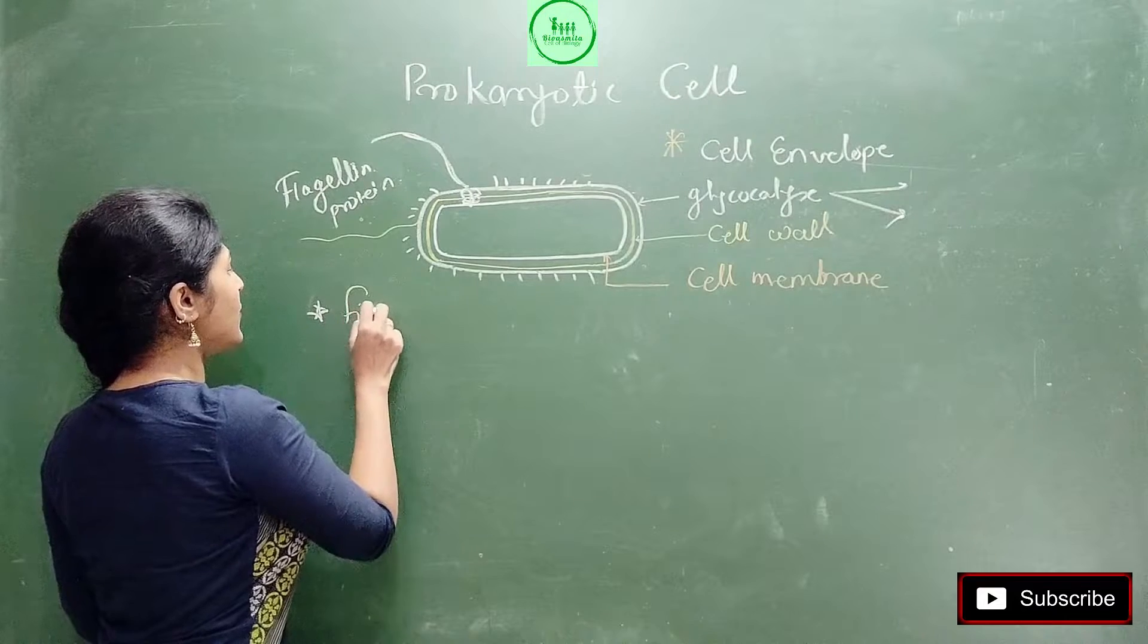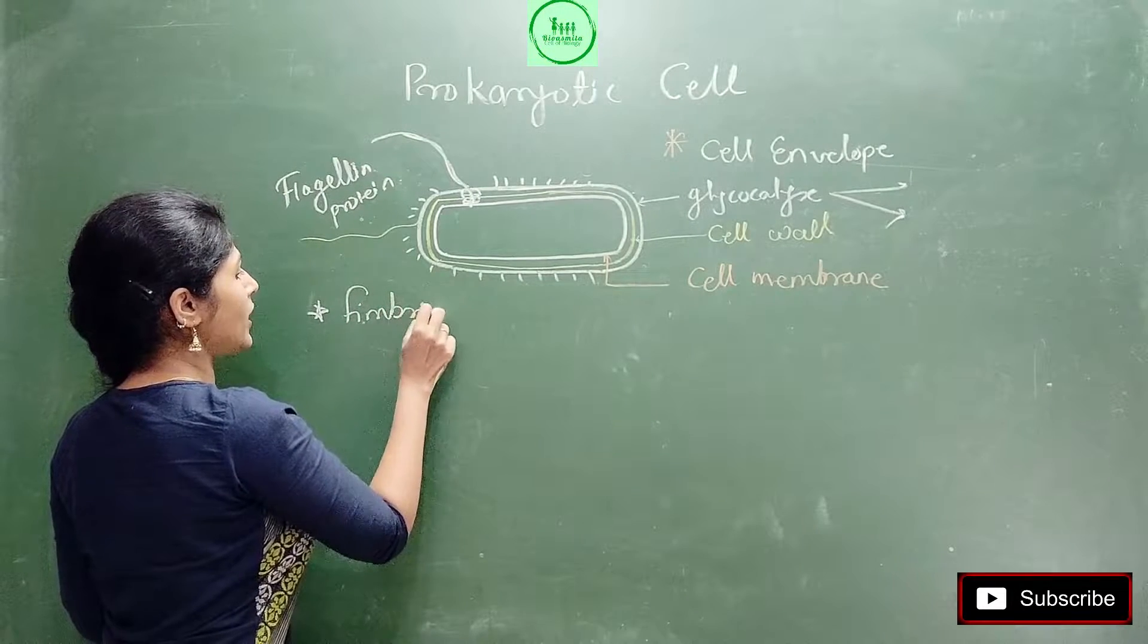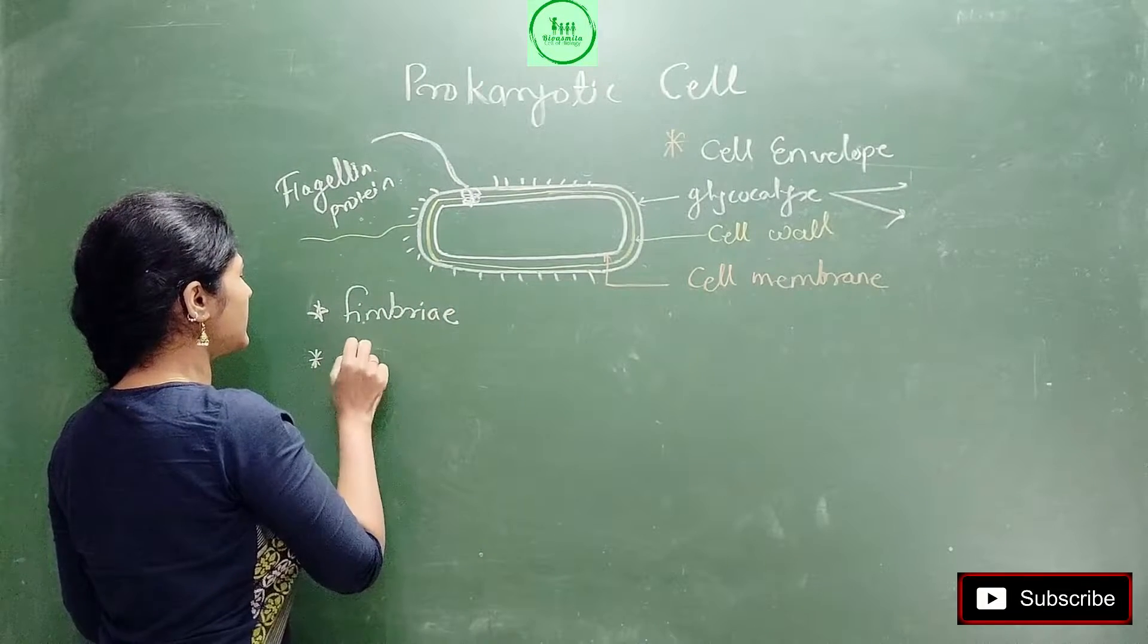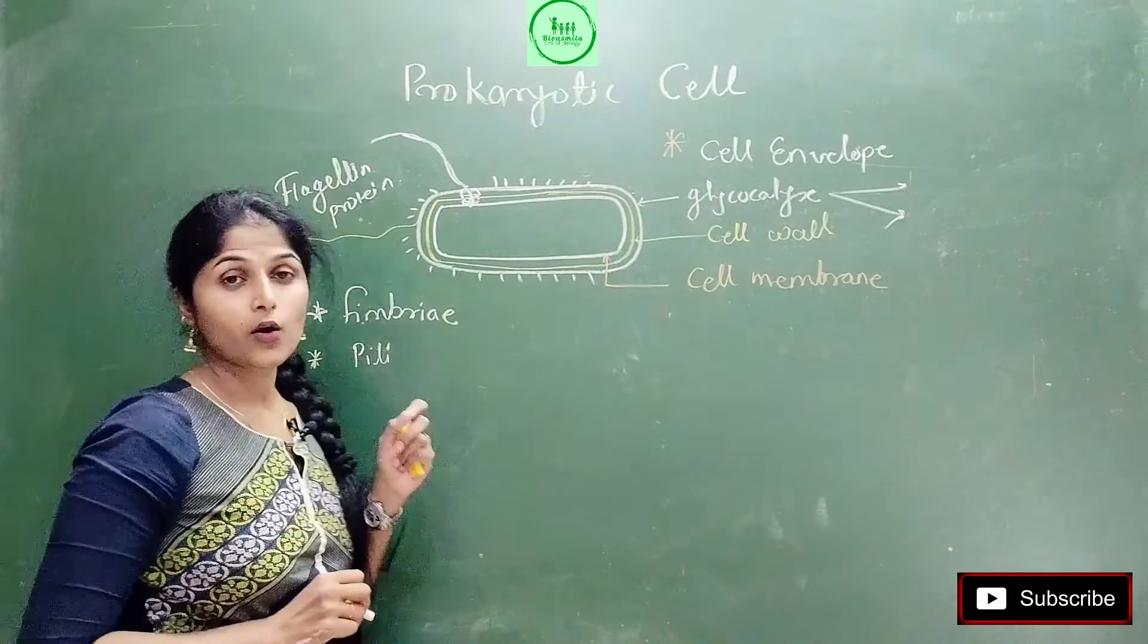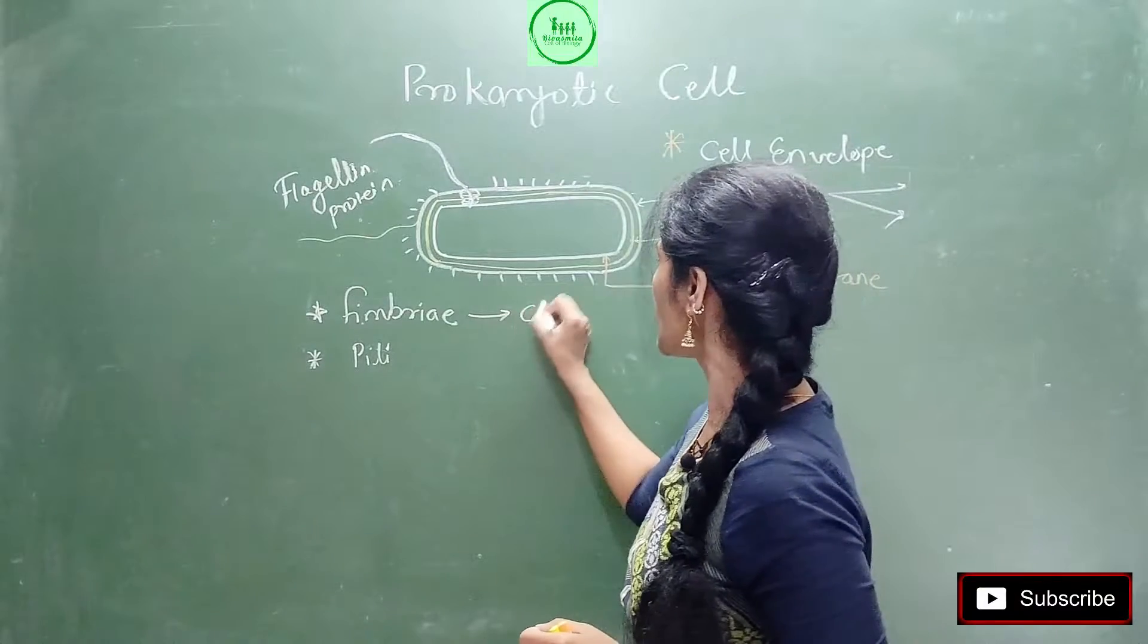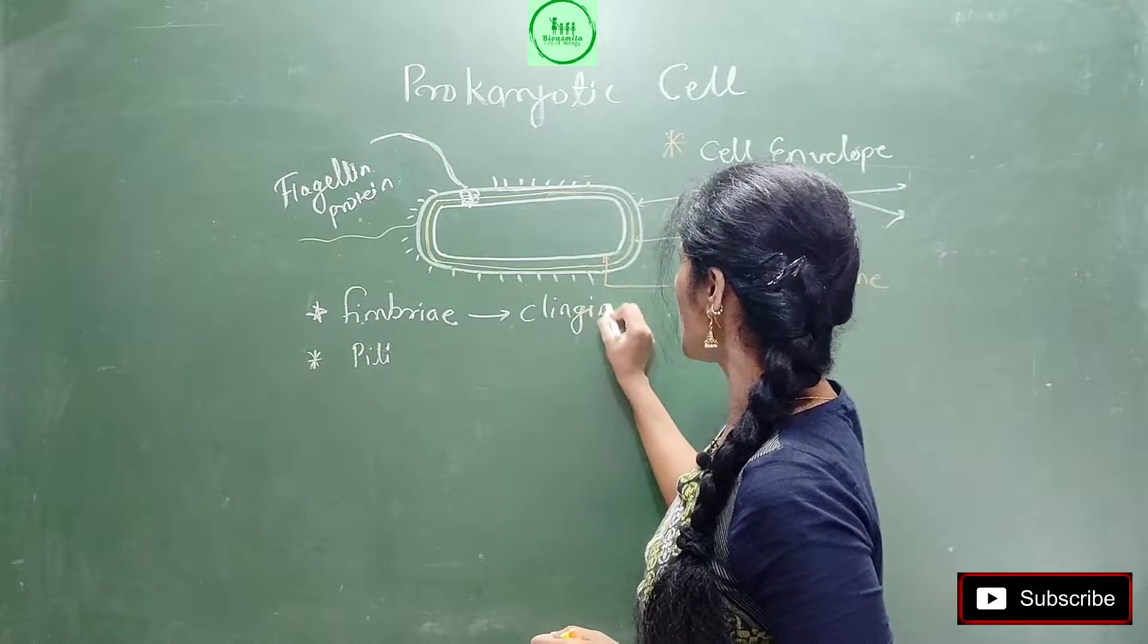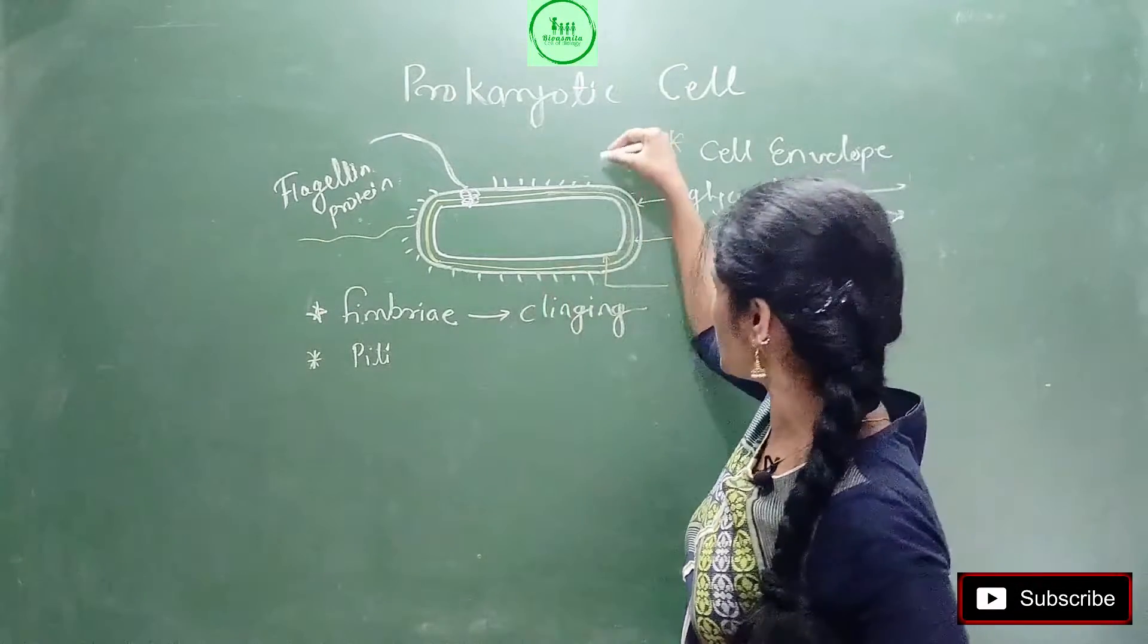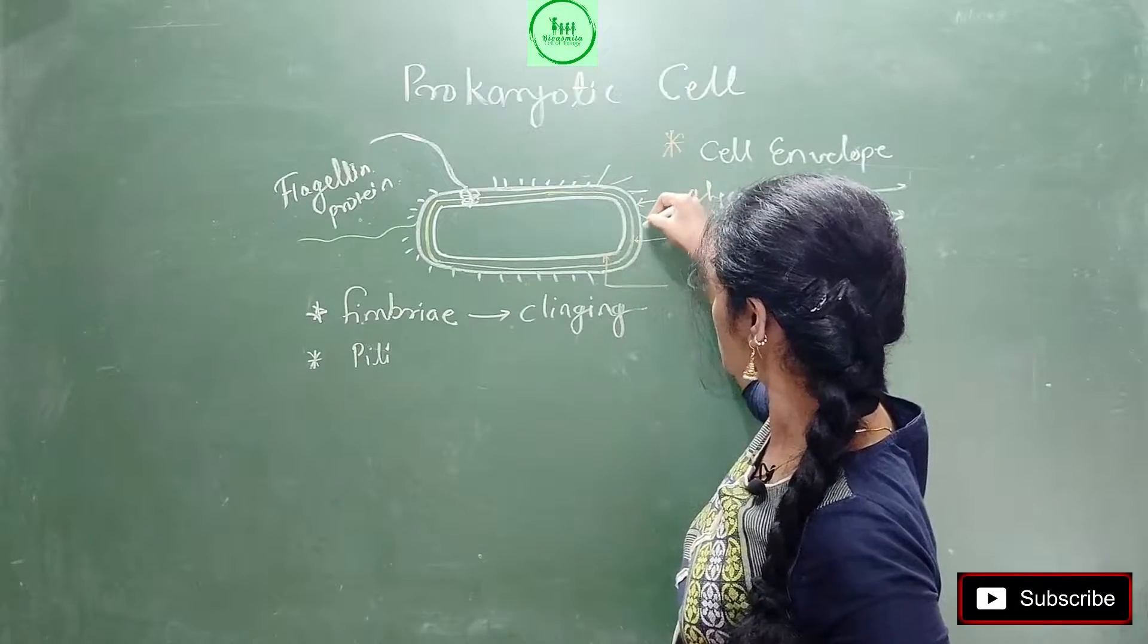On the surface, there are two more organs. One is called fimbriae and another is pili. Fimbriae are important for attachment purpose. It is also thread-like in structure.